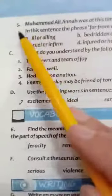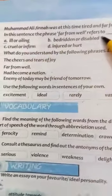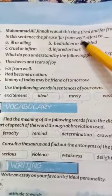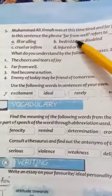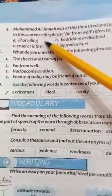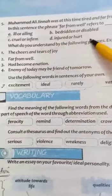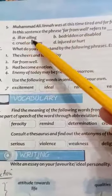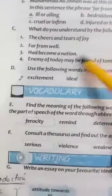Statement 5: 'Muhammad Ali Jinnah was at this time tired and far from well.' The phrase 'far from well' refers to: option A — ill or ailing; option B — bedridden or disabled; option C — cruel or infirm; option D — injured or hurt. As I explained when teaching the paragraph, 'far from well' means not in good health. So option A is correct — Quaid-e-Azam was ill or ailing.